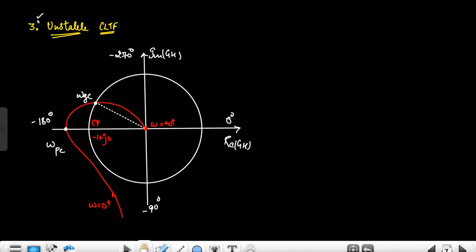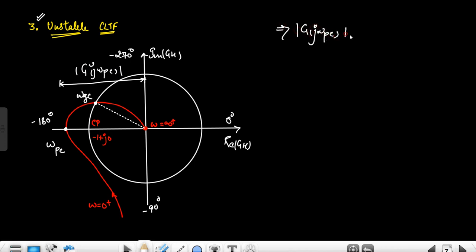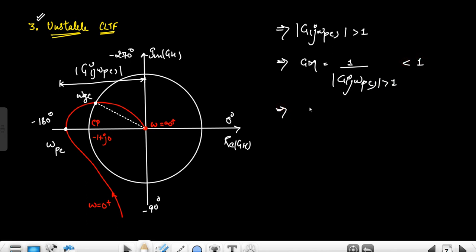The third and final case is unstable CLTF. In this case, the polar plot encircles the critical point. The magnitude at the phase crossover frequency is greater than 1 — we can clearly see this from the polar plot. Since gain margin is the reciprocal of the magnitude at phase crossover frequency, and this magnitude is greater than 1, the gain margin is less than 1. In dB, this becomes a negative dB value, i.e., less than 0 dB.